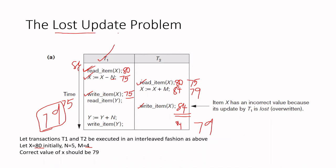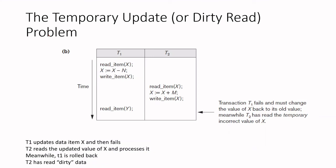But what we get in the interleaved fashion is 84, which means there is an error. This particular error is called the lost update problem — the write of X as 75 is being overwritten by another write in another transaction. This happens because we have interleaved operation working in an uncontrolled fashion. That is why we need concurrency control: when transactions execute concurrently, you cannot let them execute in an uncontrolled fashion; some control mechanism is required.